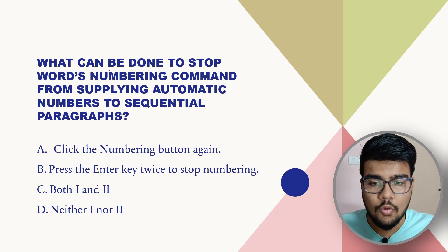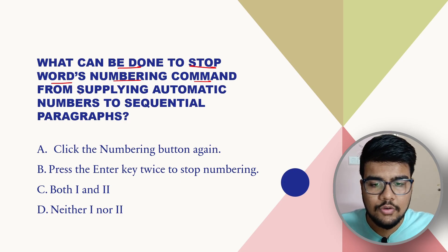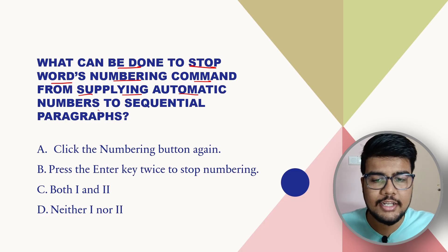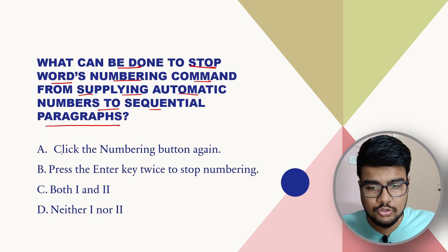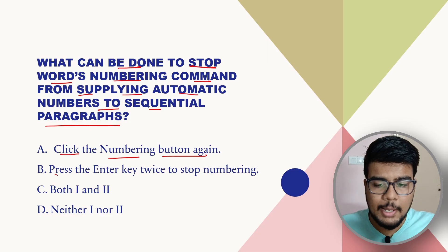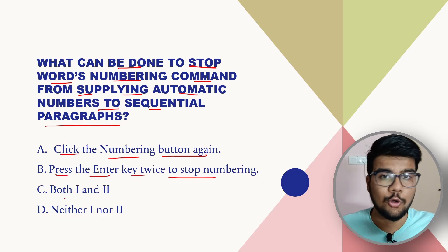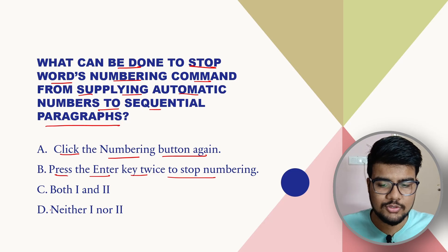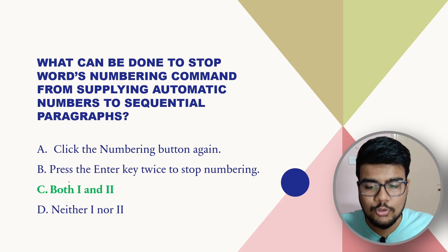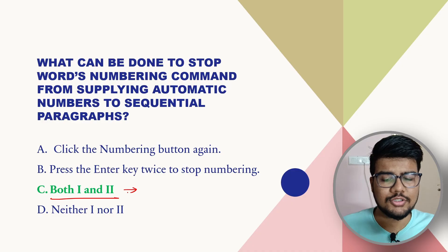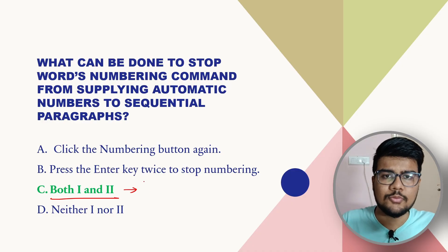What can be done to stop Word's numbering command from applying automatic numbers to sequential paragraphs? The options are: click the Numbering button again; press the Enter key twice to stop numbering; both one and two; or neither one nor two. The correct answer is both one and two — clicking the Numbering button again or pressing Enter twice both work.